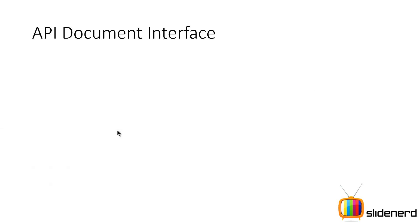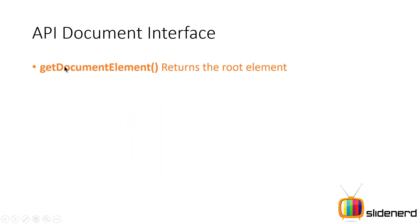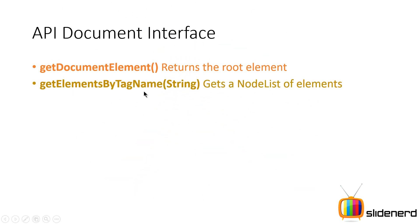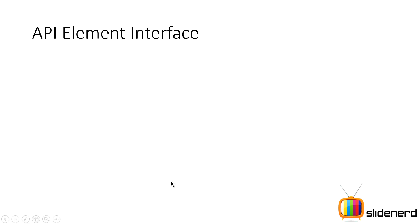First we talk about the Document interface. It has certain methods like getDocumentElement — this is the most important one because getDocumentElement is going to return the root element inside your XML document. It also has other methods like getElementsByTagName, which lets you get all elements given a tag name. Then there's the Element interface which comes next.